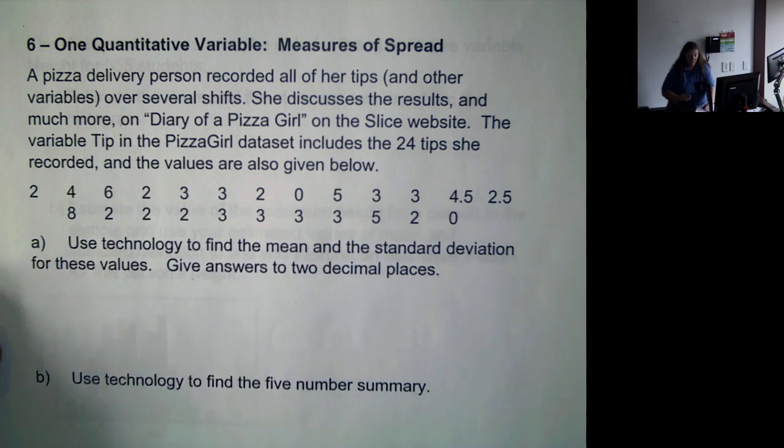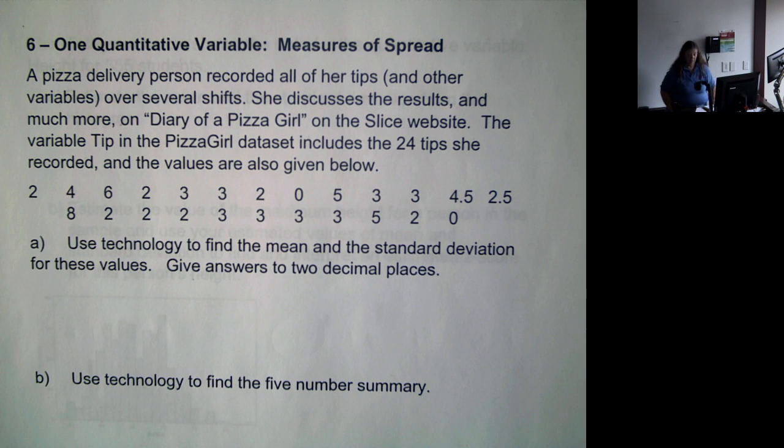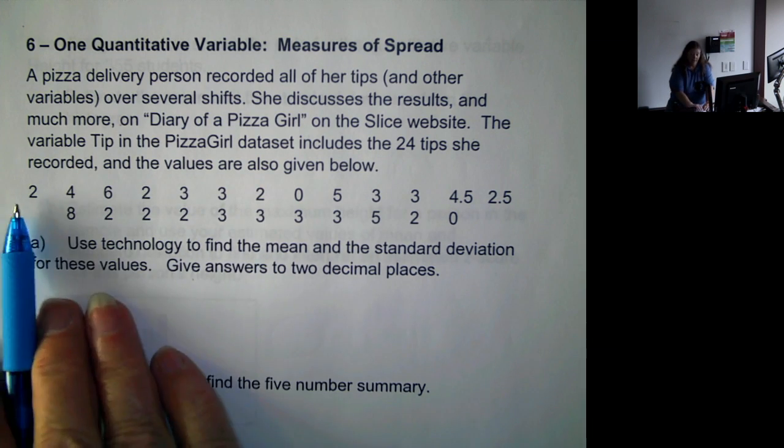So we have a pizza delivery person recorded all of her tips over several shifts. She discusses the results and much more on Diary of a Pizza Girl on the Slice website. The variable tip in the dataset includes 24 tips she recorded and these values are given to us.